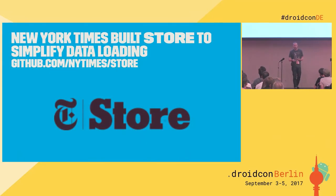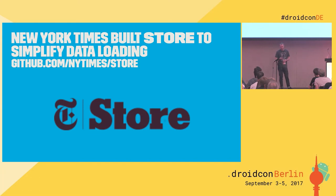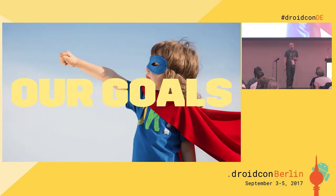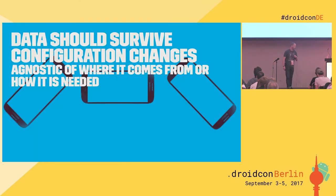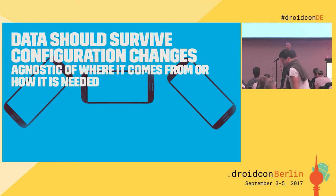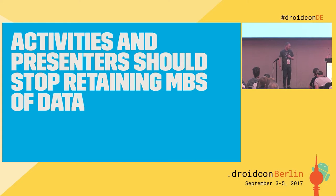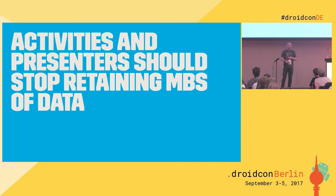We wanted to simplify this process and make it easy. Our goals: data should survive configuration change. We should be agnostic of where it comes from — whether you're in an activity, a fragment, or a view, you just want the data to show. And activities and presenters should stop retaining megabytes of data. A store should hold the data.